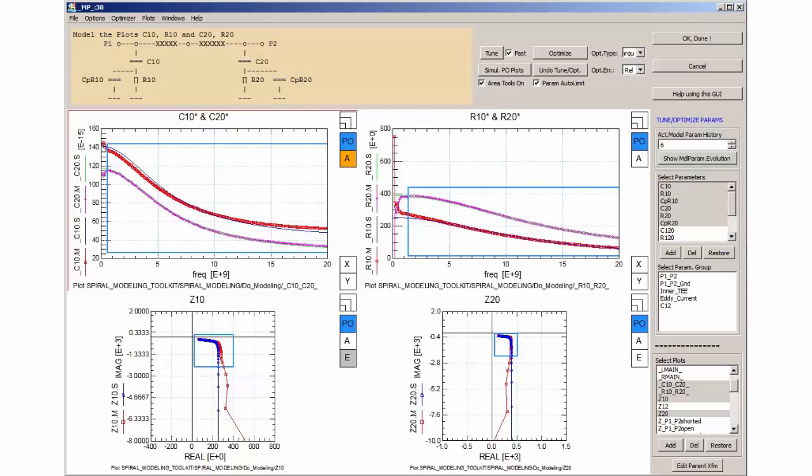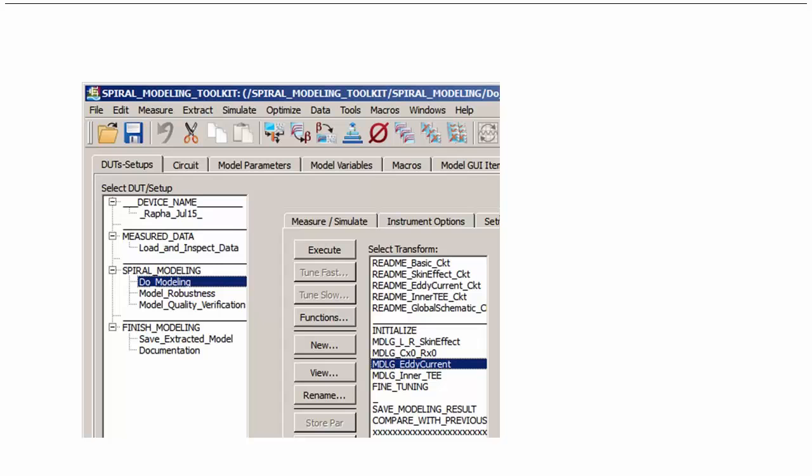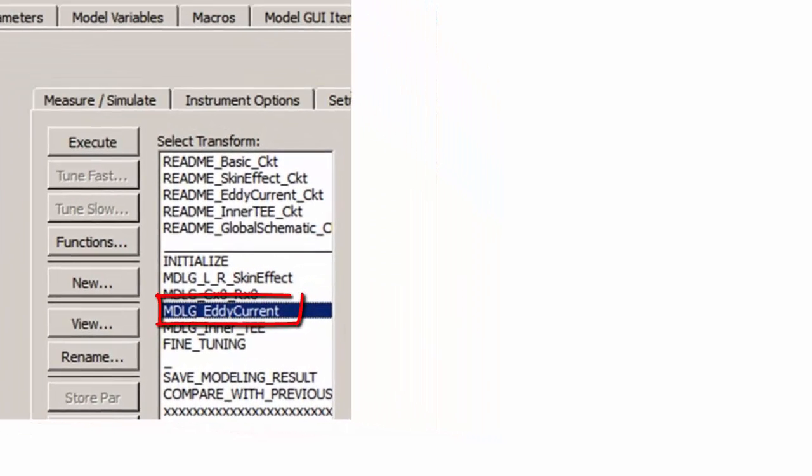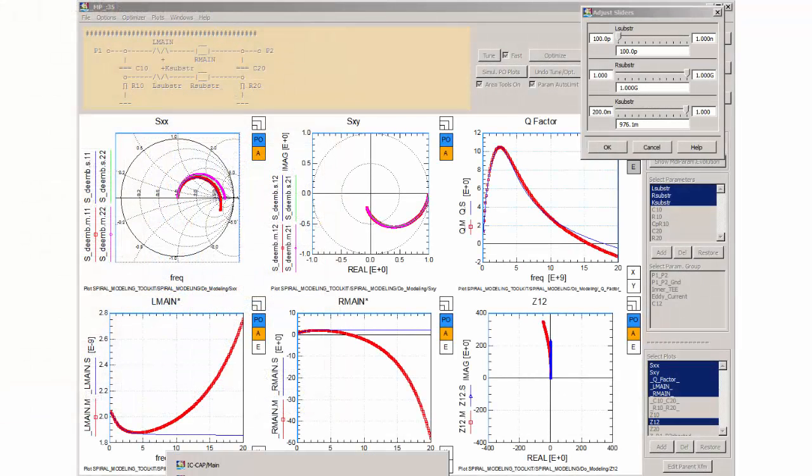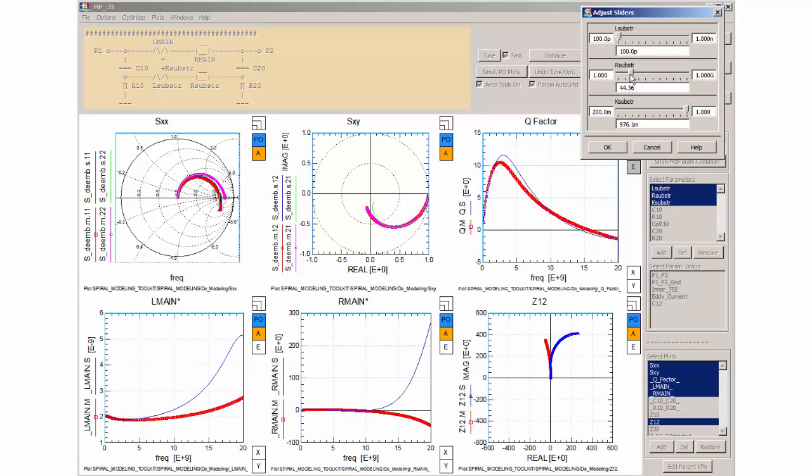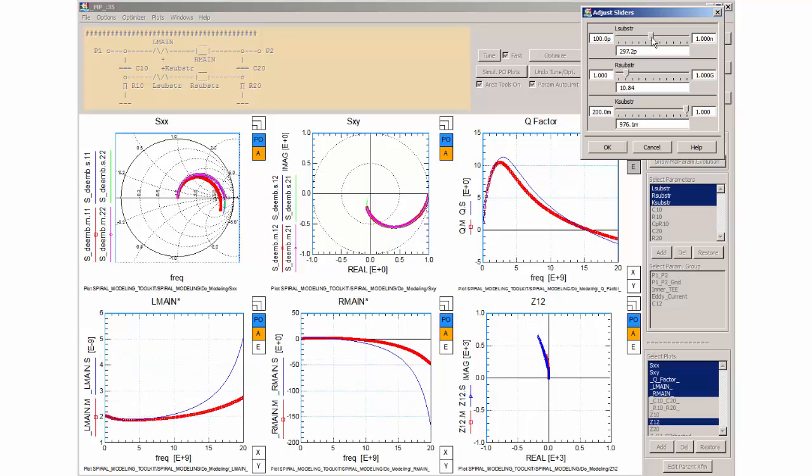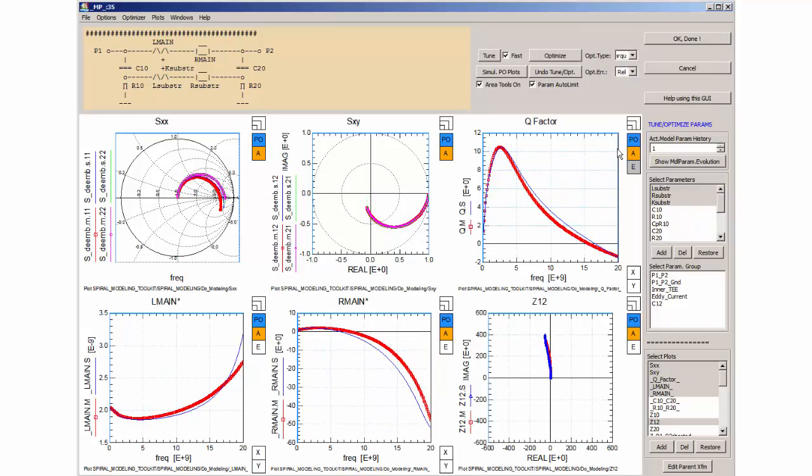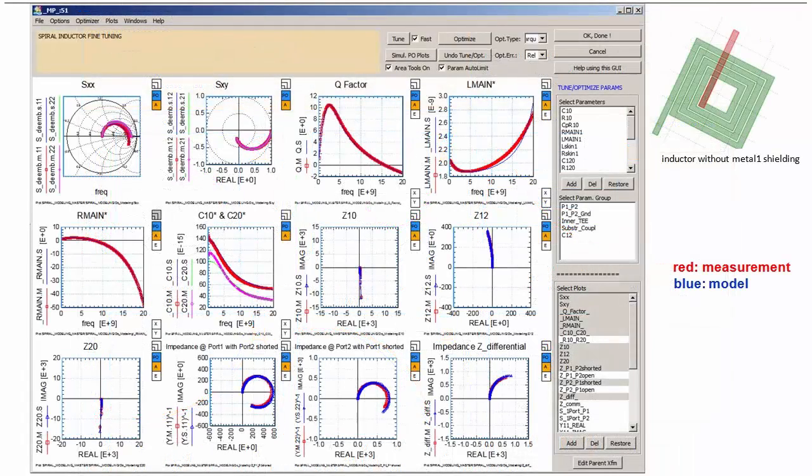We know that the inductor of this example does not feature a metal 1 shielding. Therefore, the next step is the modeling of the eddy current. I hit Modeling Eddy Current and get another window for this modeling step. The main topic now is the modeling of the impedance Z12 and its trace into the negative impedance half plane for high frequencies. I tune the three eddy current parameters L-substrate, R-substrate and coupling substrate to get the fit.